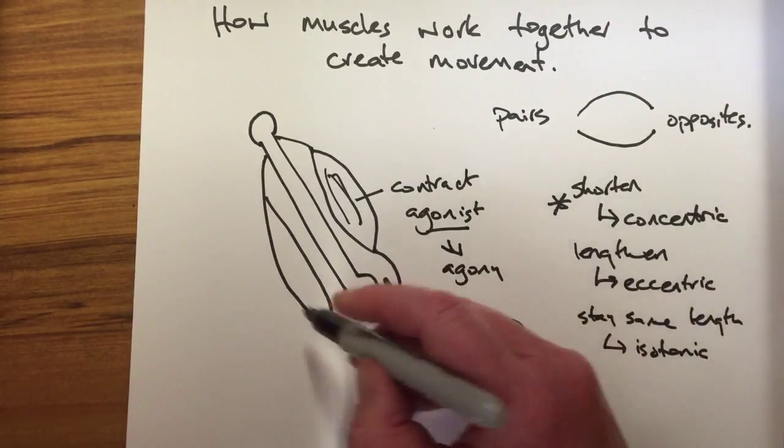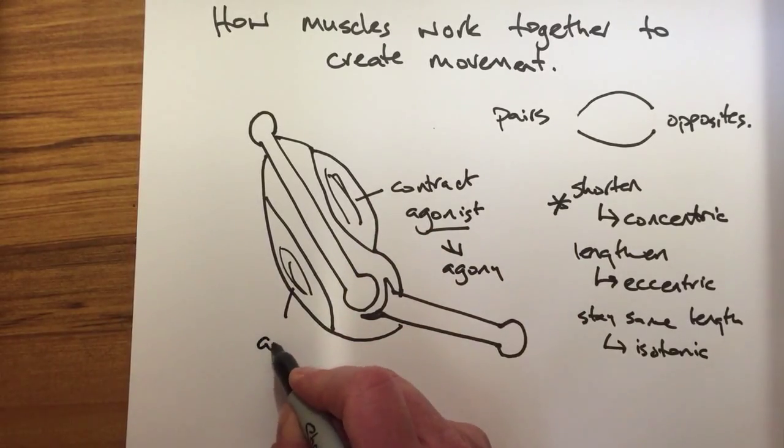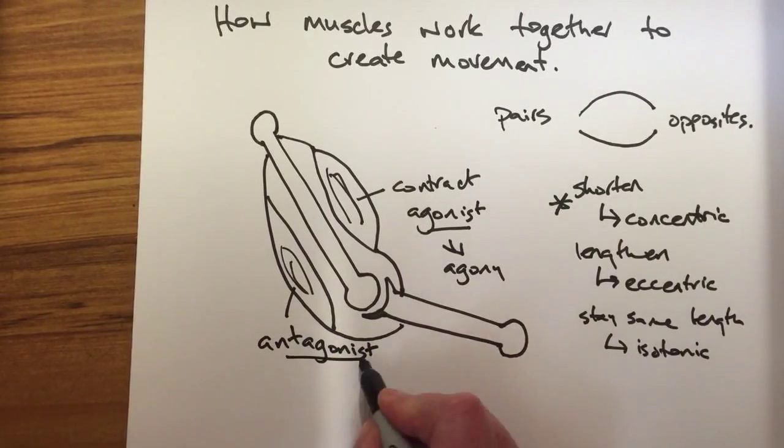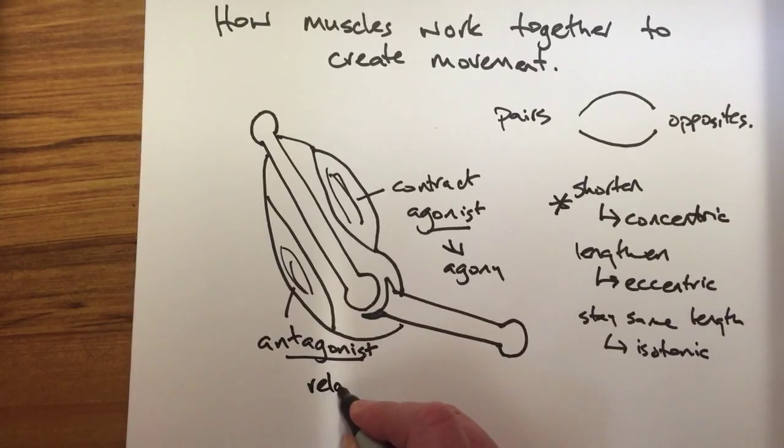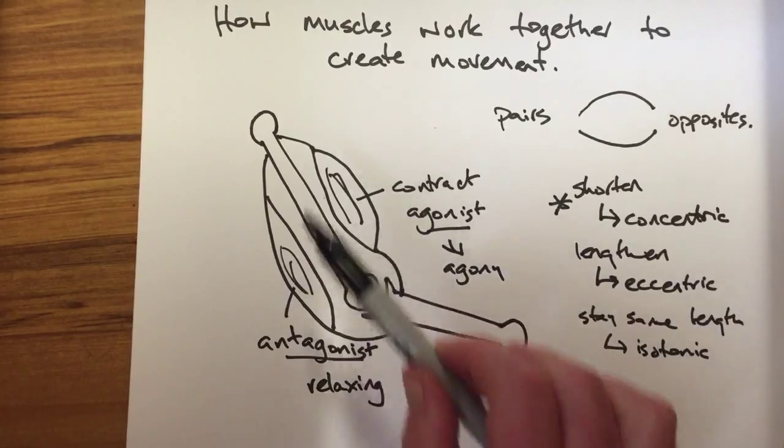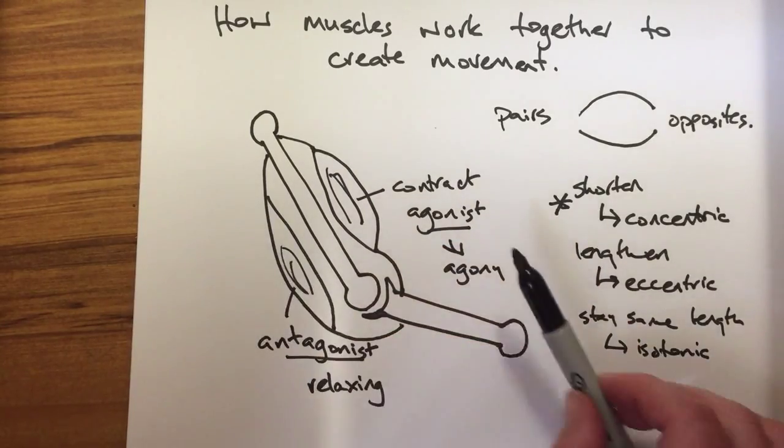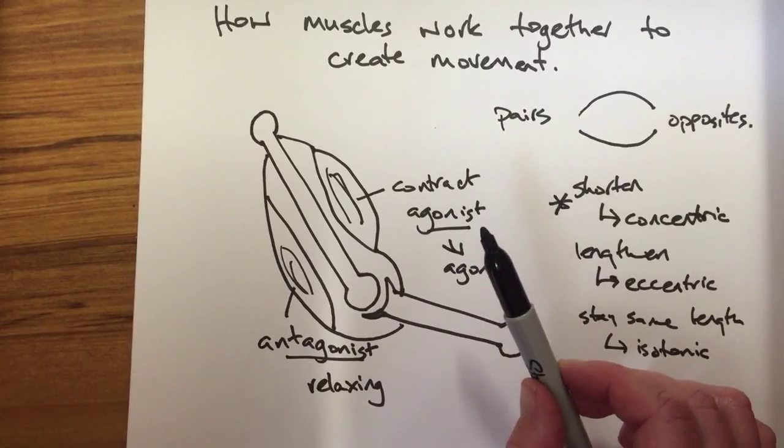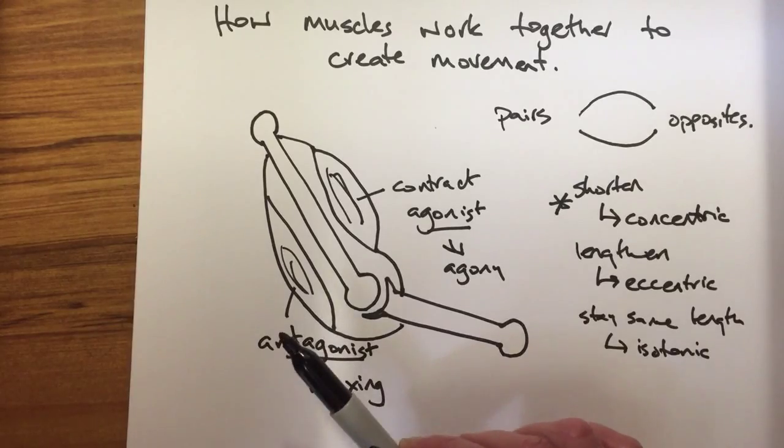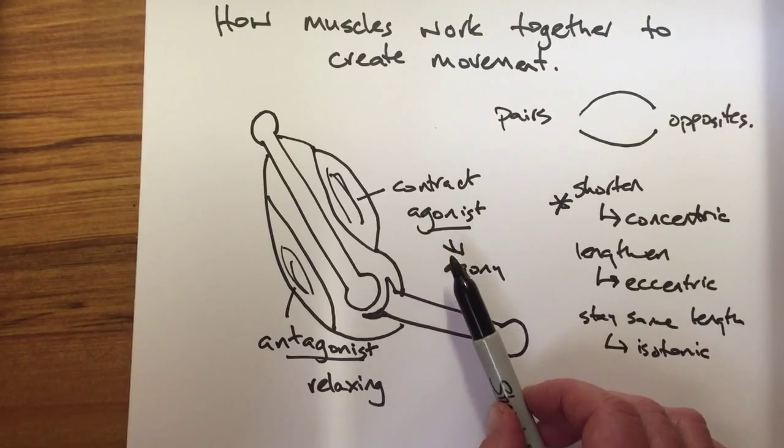The muscle on the other side, so in this case it's going to be a tricep, it is called the antagonist. And this means it is relaxing to allow that movement to occur. So one muscle will contract while the other muscle relaxes. So the agonist's agony is always the working muscle. It is the one that contracts. The antagonist is the one that relaxes. It's allowing the joint to move by relaxing while the other contracts.